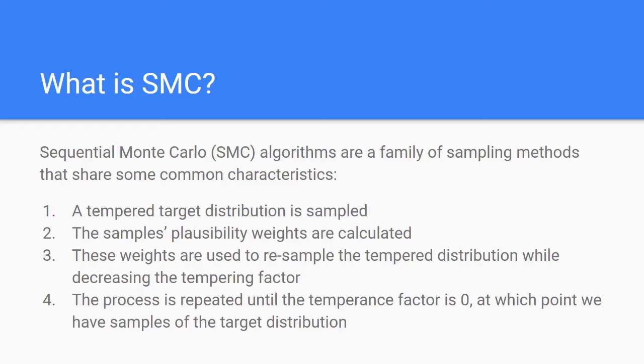We can say that SMC algorithms are a broad family of sampling methods that share some common characteristics. First, a tempered target distribution is sampled. Then these samples' plausibility weights are calculated. These weights are then used to resample the tempered distribution while decreasing the tempering factor. This process is repeated until the tempering factor is zero, at which point we have sampled the target distribution.